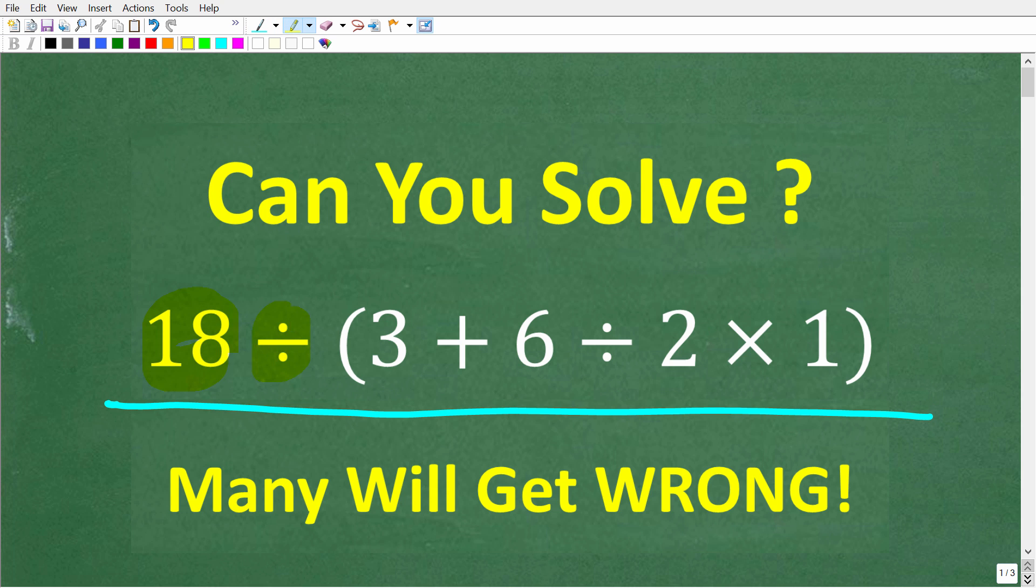We have 18 divided by parentheses, 3 plus 6 divided by 2 times 1 in parentheses. So once again, no calculators, but if you think you know the answer, put that into the comment section. I'm going to show you the correct solution in just one second.